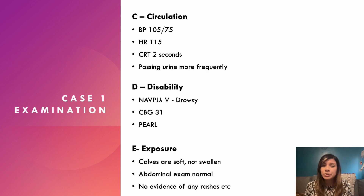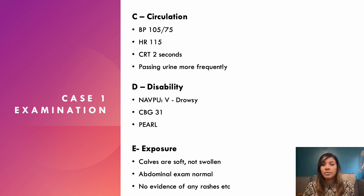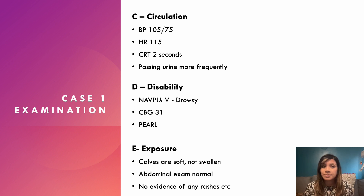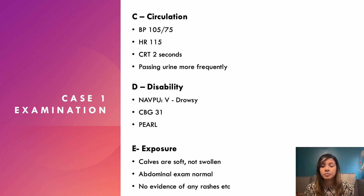Moving through the A to E: blood pressure is 105/75 — on the lower side of normal, so check if that's been his post-op baseline. Heart rate is 115, so ask the nurses for an ECG in case of arrhythmia. Capillary refill is 2 seconds and he's passing urine more frequently. On disability, he's drowsy, responding to voice, pupils equal and reactive, and his blood glucose is 31 — very high. On exposure, calves are soft and not swollen, abdomen is soft, no rashes.